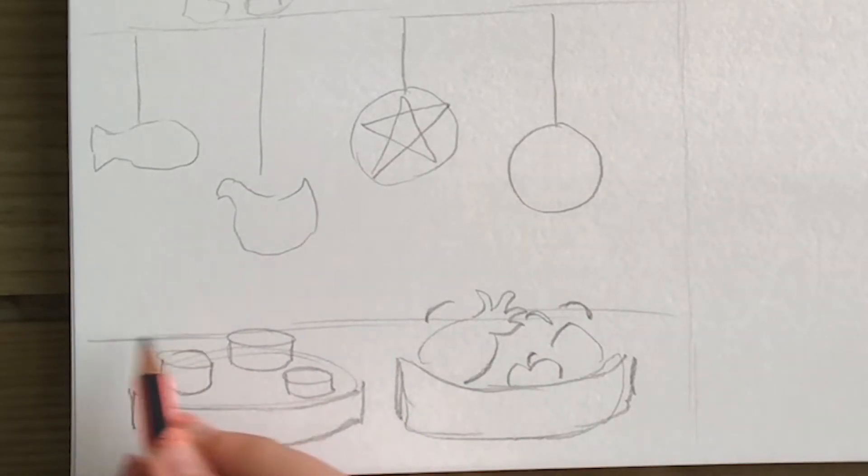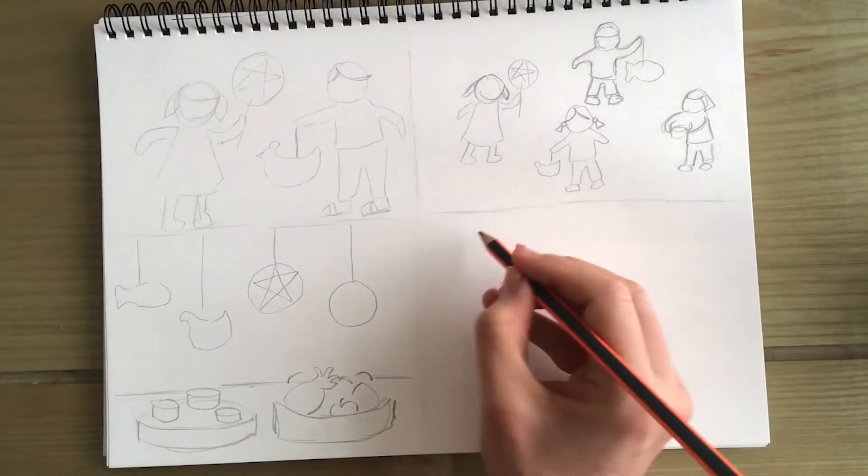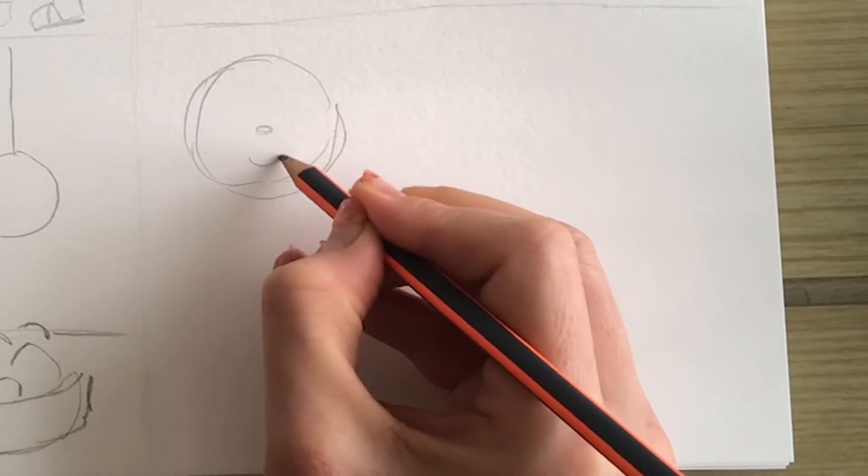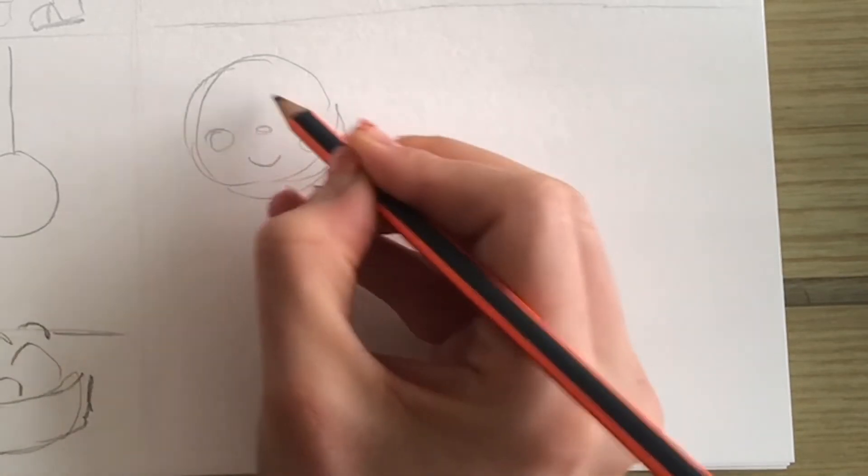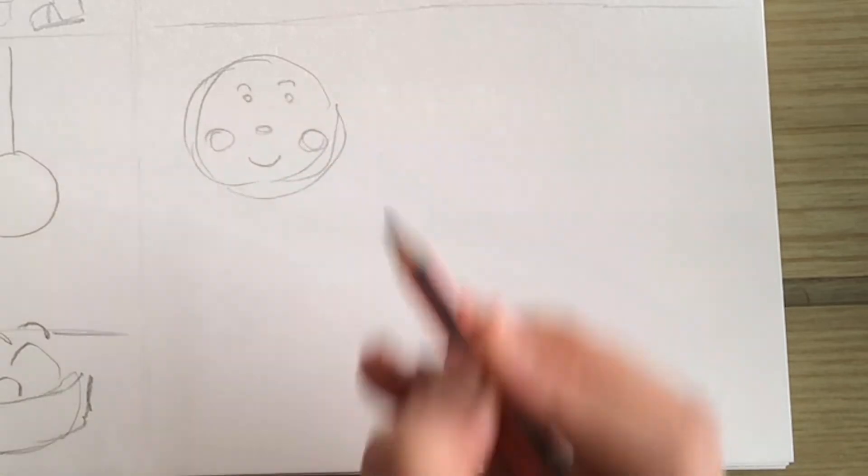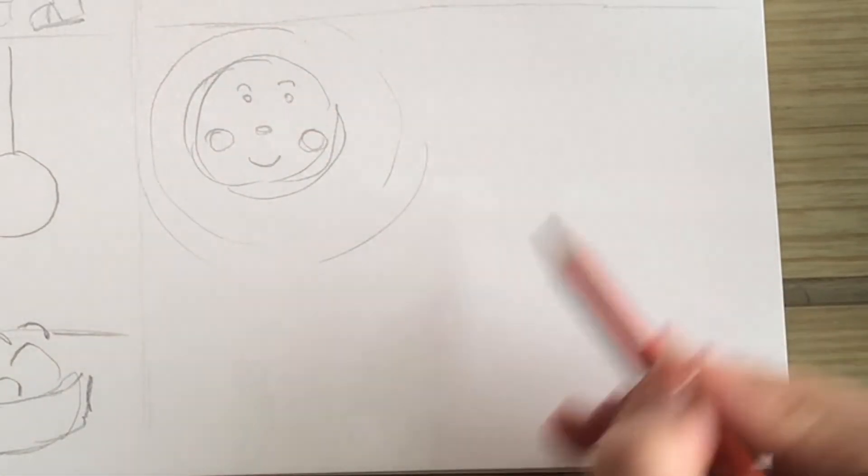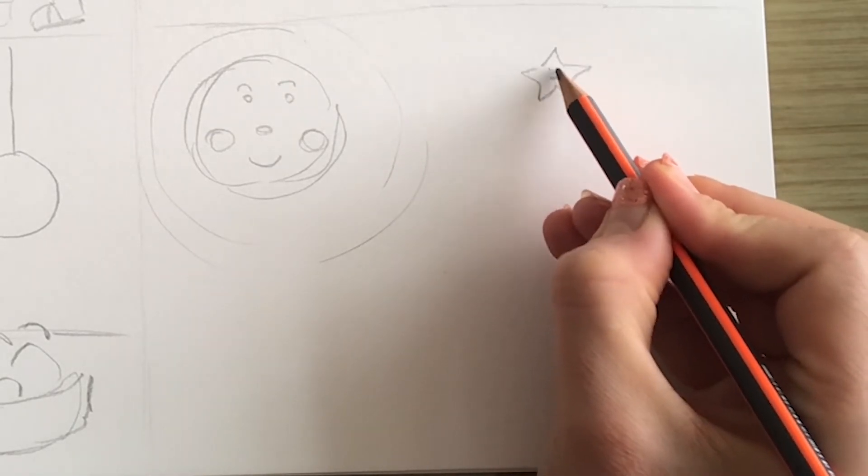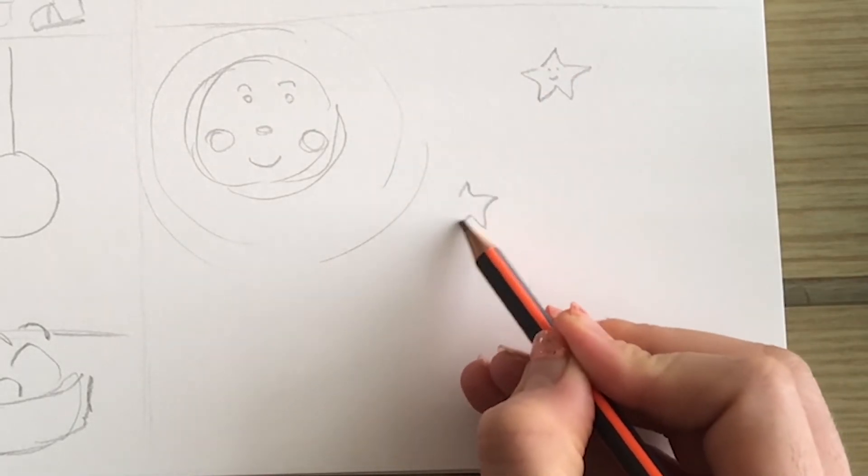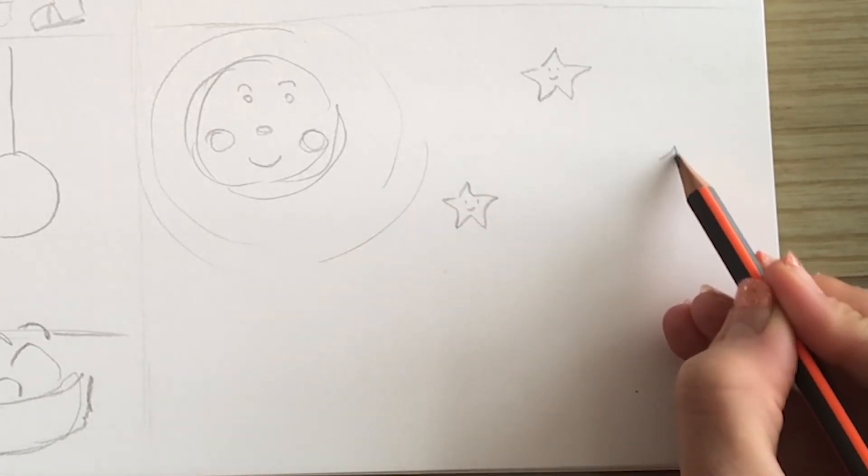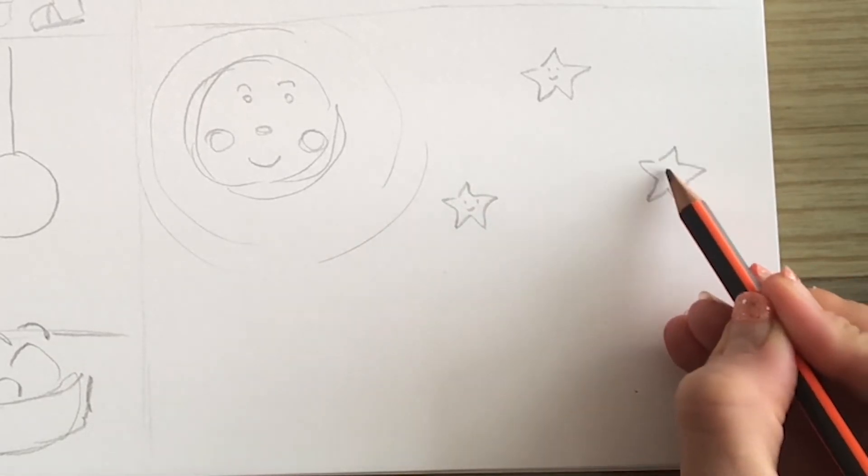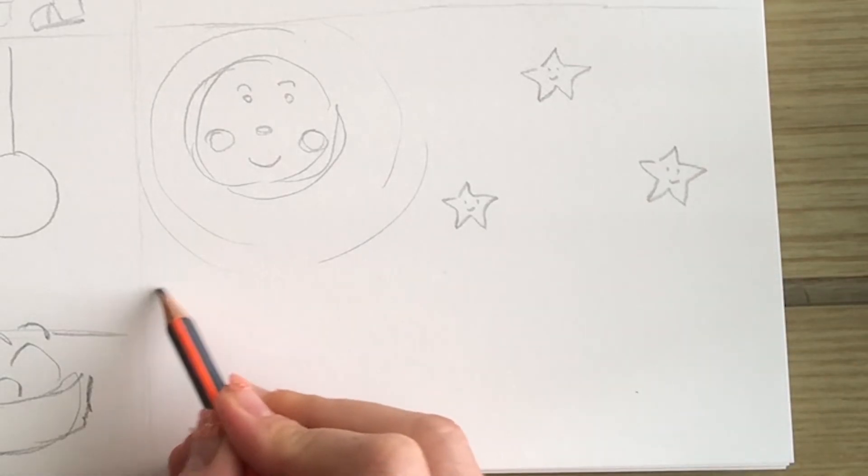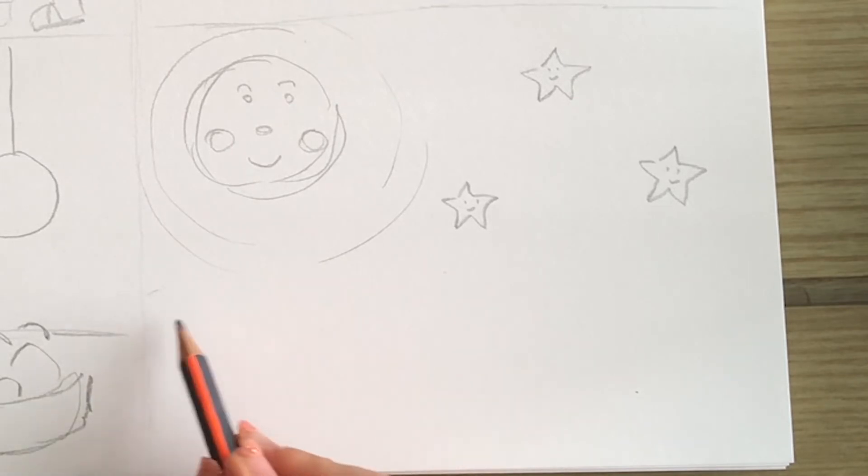And another image that we practiced painting last week was just the moon. So maybe in this picture I might just think about having the moon that I drew at the top. And maybe thinking about having some stars in the sky. And maybe some houses below.